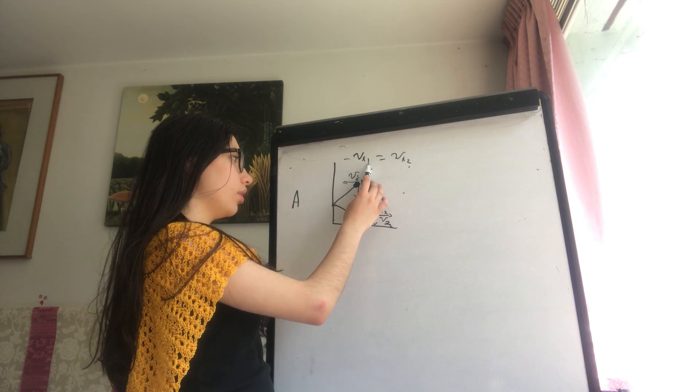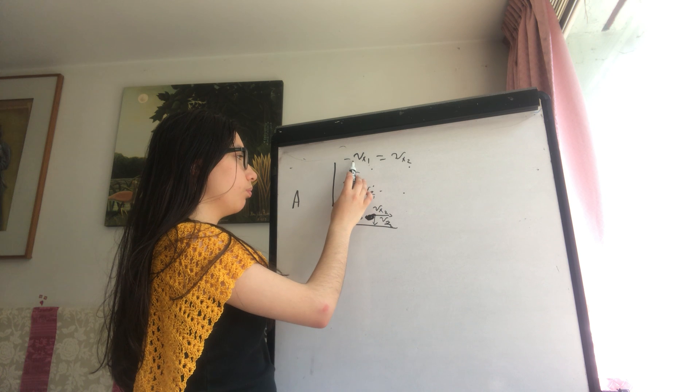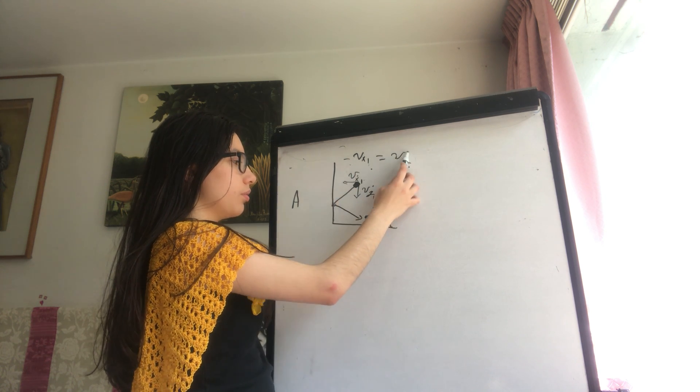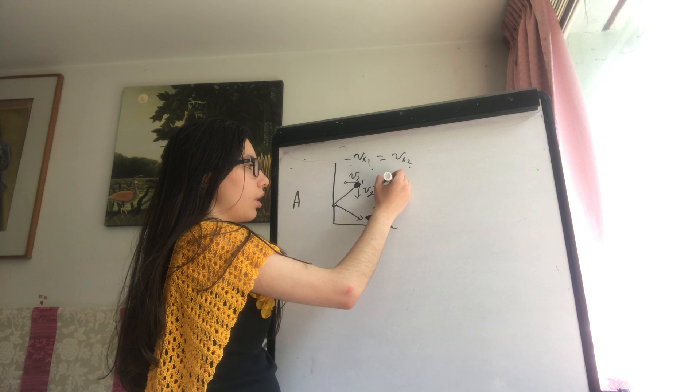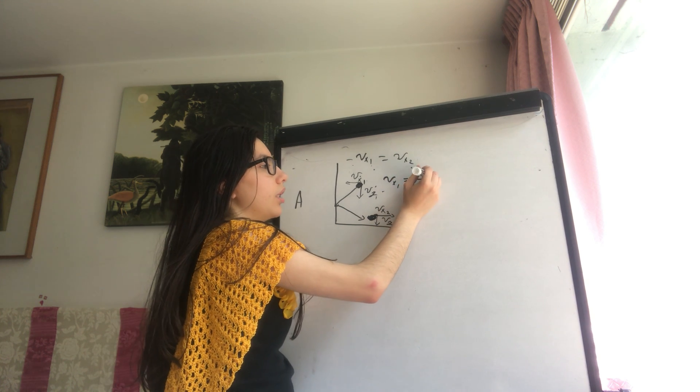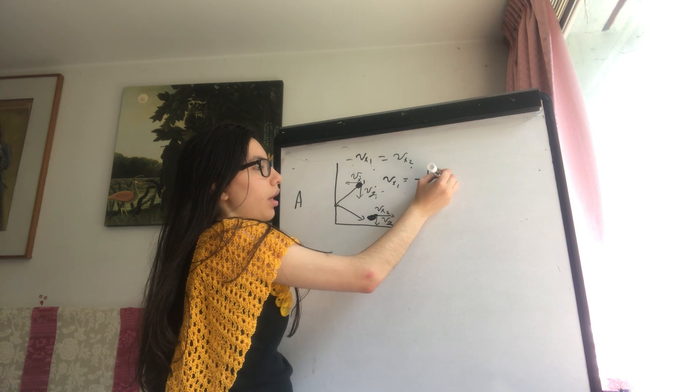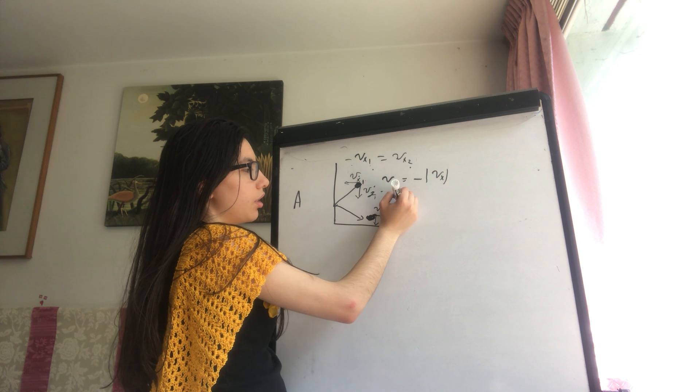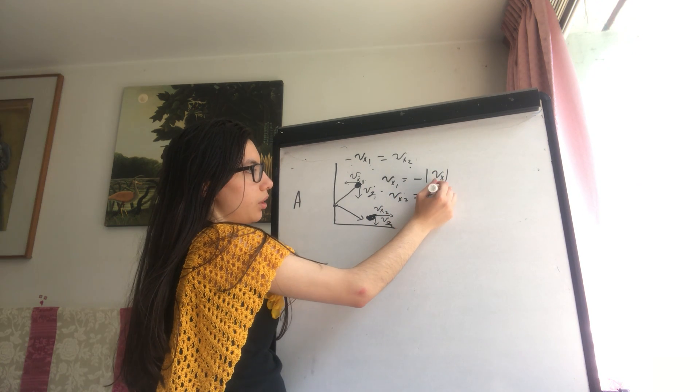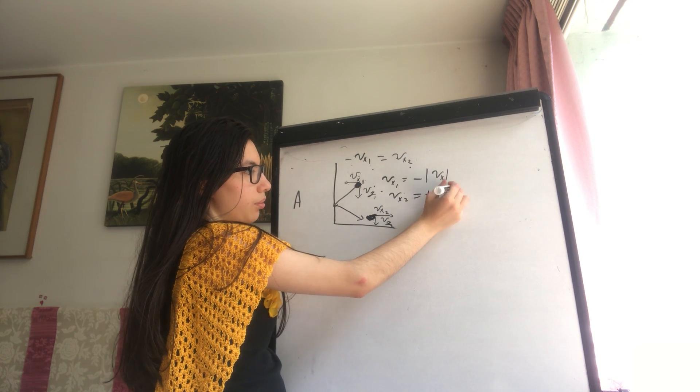So Vx1 is negative, and if we multiply by negative, we have this positive. Or you can think of it as V sub X1 equals the negative absolute value of Vx, and V sub X2 equals the positive absolute value of Vx.